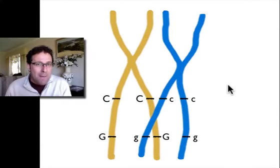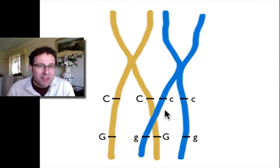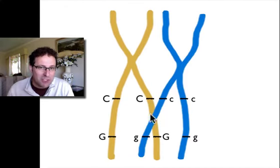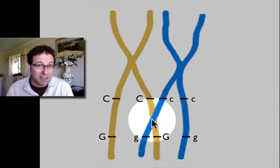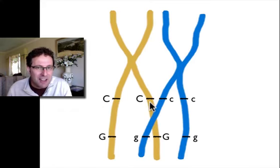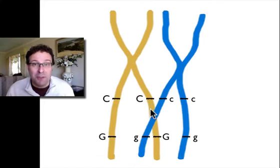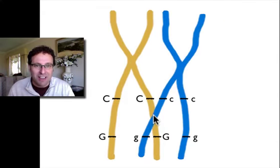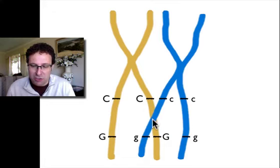How many recombinant gametes we get is completely dependent on how far apart the two genes are from each other. If they're quite a distance apart, crossing over between them is more likely — whether it happens here, here, or here, they'd be separated. But if the two genes are very close together, crossing over won't separate them as often, because very often the crossover point will leave big C and big G still together. The further apart they are, the more likely it is that the chiasma will fall between those two genes.